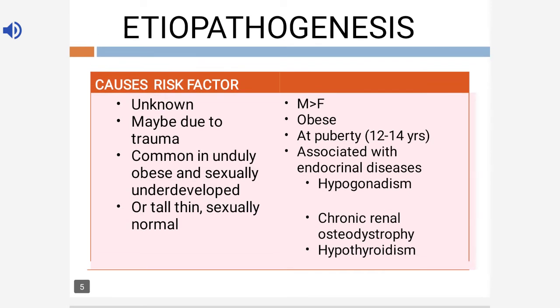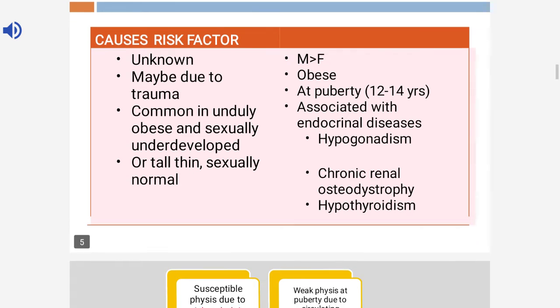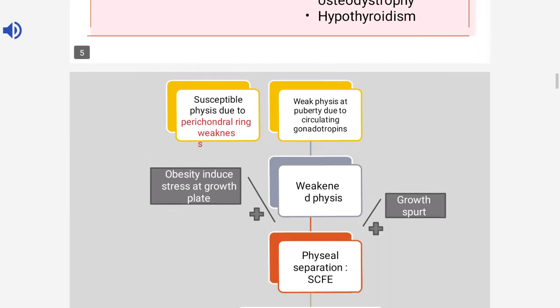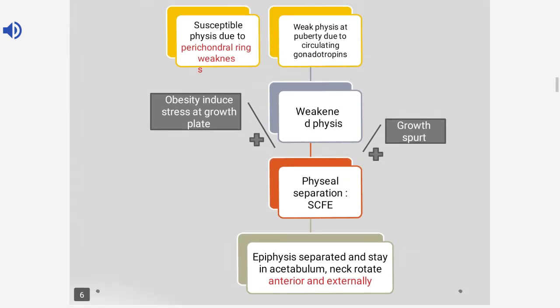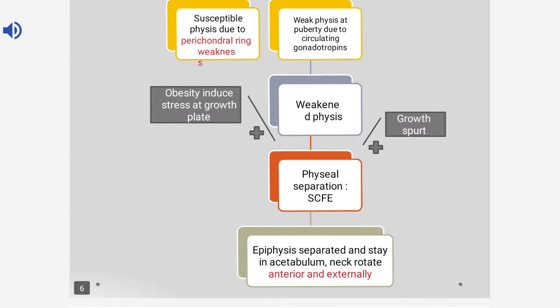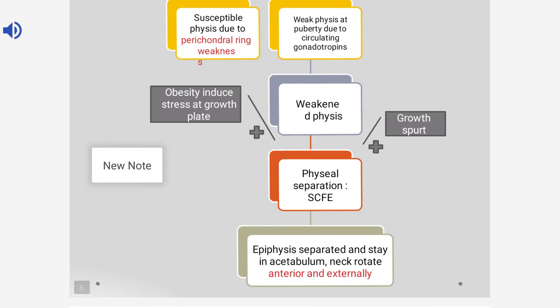You can always remember that an obese male patient at pubertal age is more prone for slipped capital femoral epiphysis. Coming to the pathogenesis, the physis is susceptible to trauma or slippage due to perichondral ring weakness.